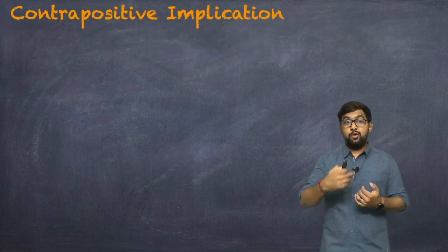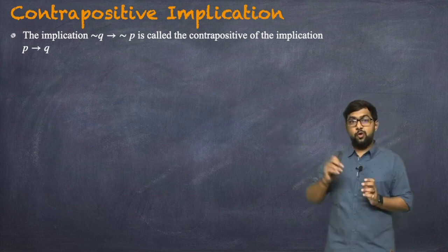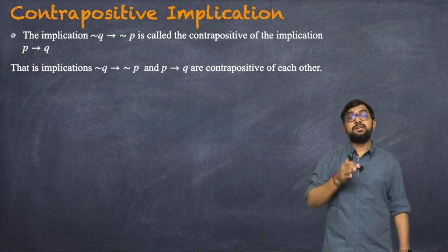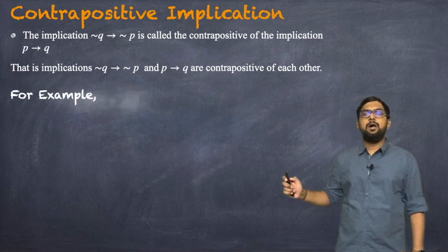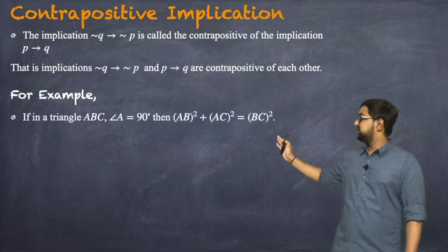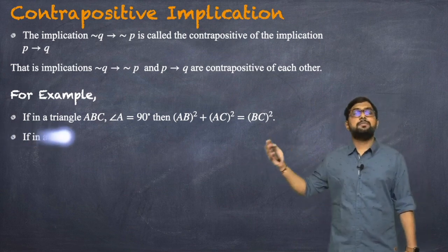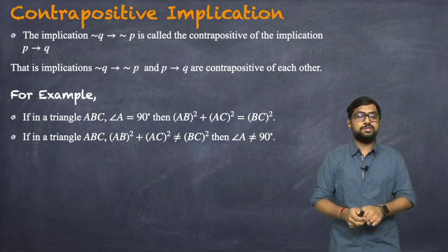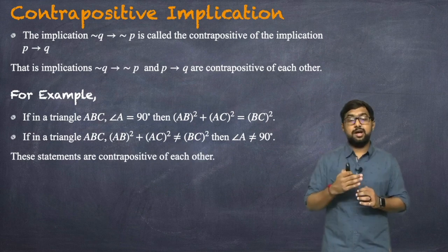Now let's discuss the contrapositive. The implication 'not Q implies not P' is called the contrapositive of 'P implies Q.' For example: 'If in triangle ABC, angle A = 90°, then AB² + AC² = BC²' (Pythagoras theorem). Its contrapositive is: 'If AB² + AC² ≠ BC², then angle A ≠ 90°.' These two statements are contrapositive of each other.